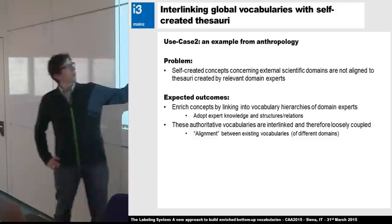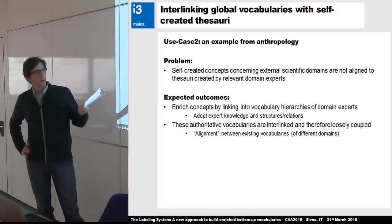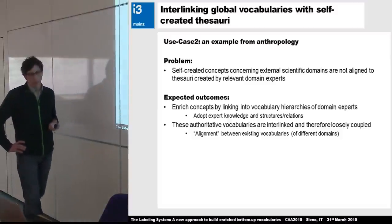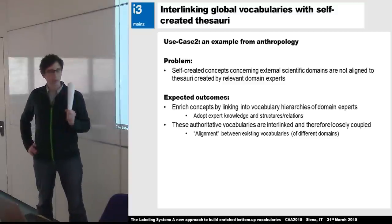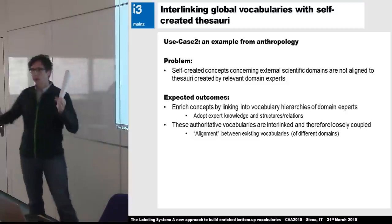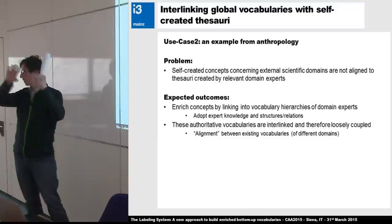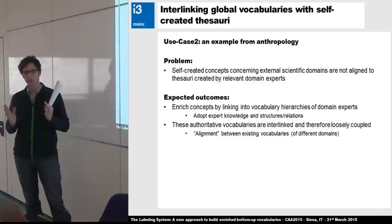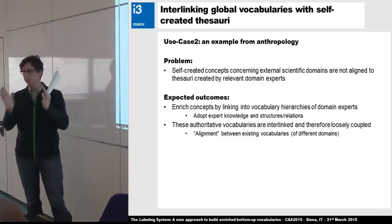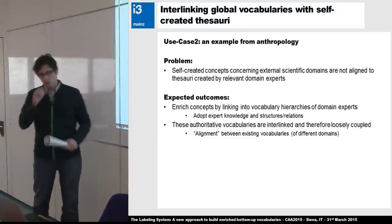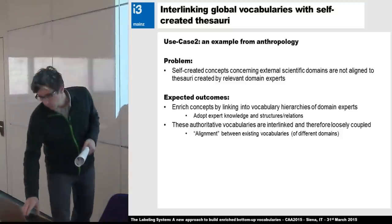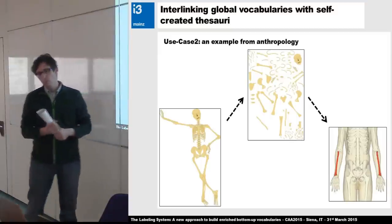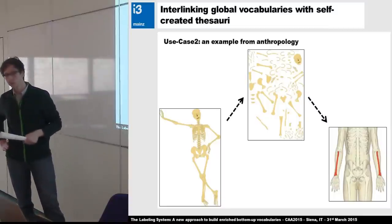The expected outcomes were: I wanted to enrich my concepts by linking into vocabulary hierarchies of domain experts and adopt their expert knowledge and structures. I wanted to interlink and couple authoritative vocabularies from different domains describing the same thing, using the bottom-up approach — connecting to different vocabularies and defining relations between them, making alignment between existing vocabularies possible. This is especially relevant for the natural sciences domains, which already have many controlled vocabularies. I chose the radius bone, which is a find we often have in the Neolithic.